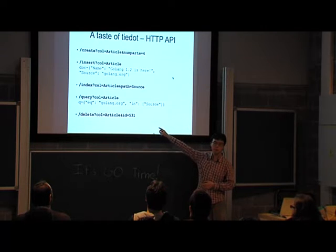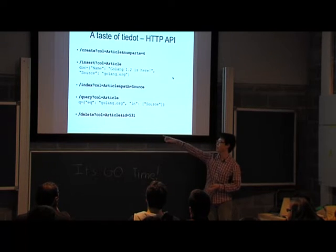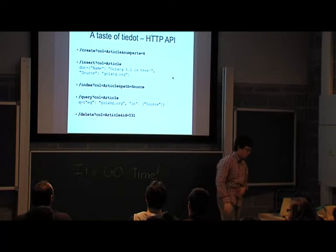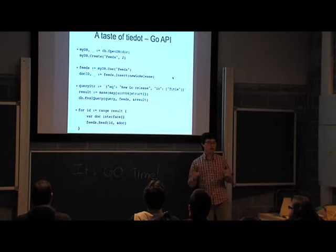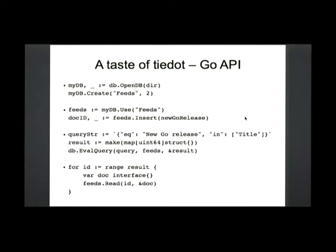And a design highlight of it is that it really focuses on the throughput of I/O operations. So collections and indexes are all partitioned to allow parallel I/O operations executing in one collection, which makes it really different from Mongo from this perspective. Let's get a taste of the HTTP API. I was hoping to make it straightforward. So in the beginning, we create a collection called article and we allow at most four parallel I/O operations by partitioning the collection into four parts.